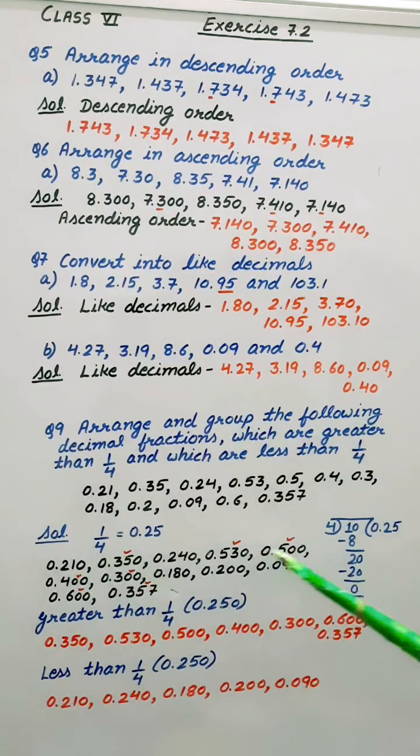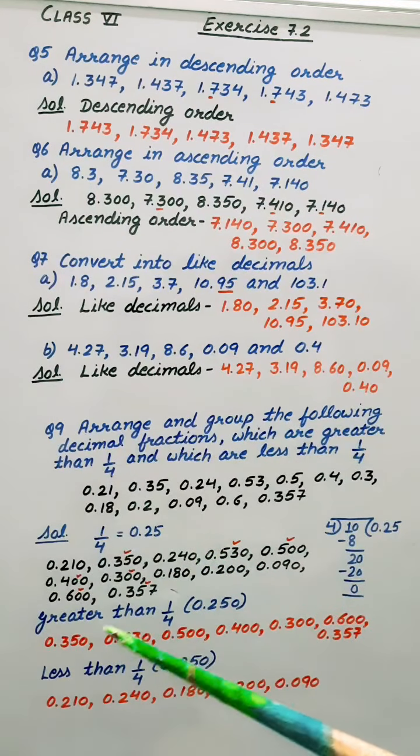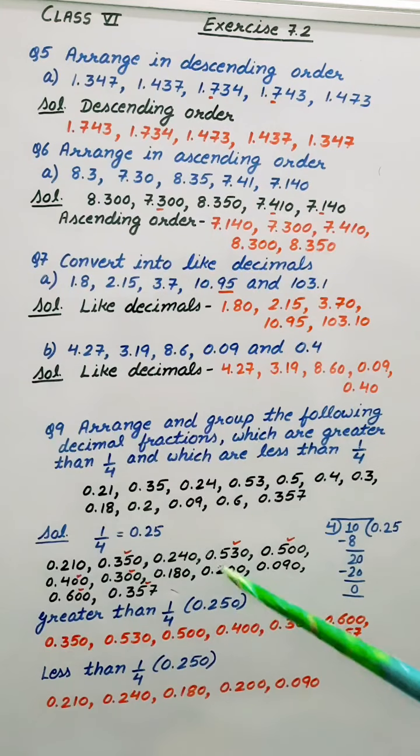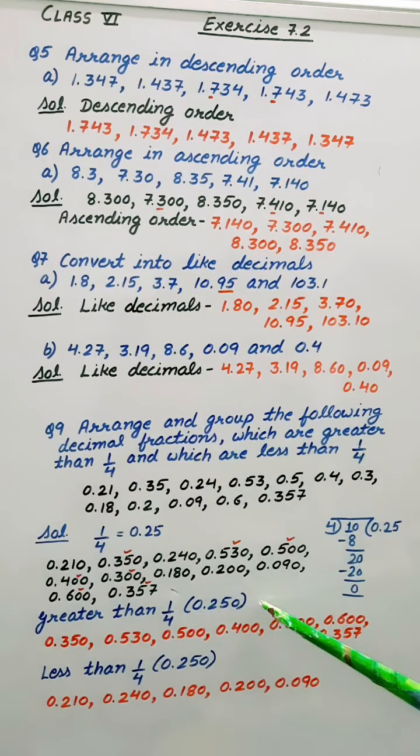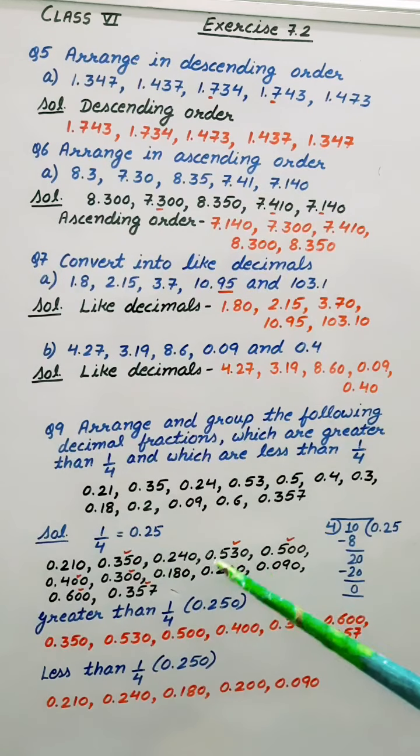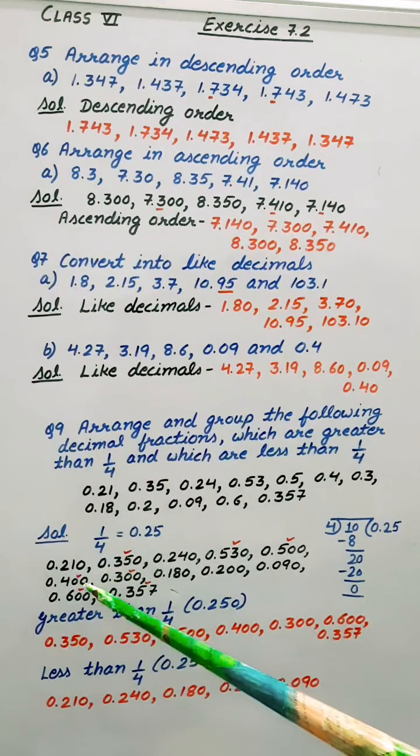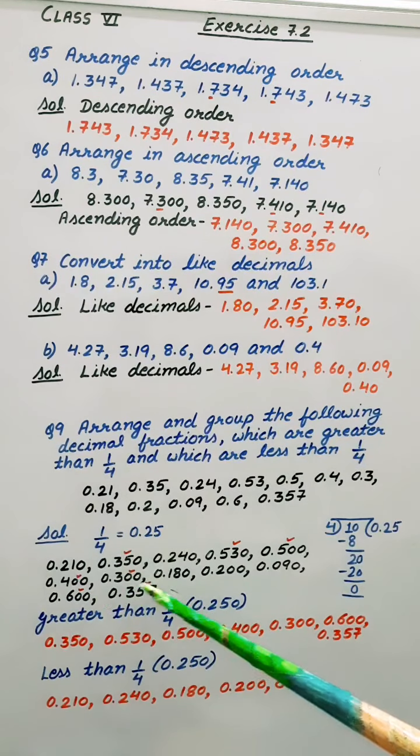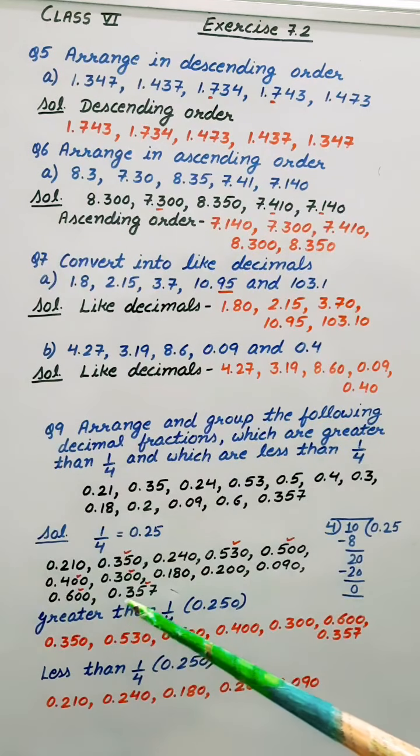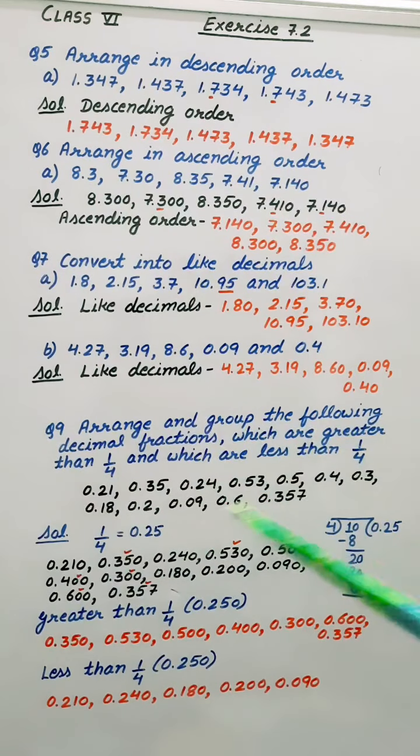So first of all, I have written them in like decimals. Now the numbers which are greater than 1 by 4, that means 0.250. They are 0.350, 0.530, 0.500, 0.400, 0.300, 0.600, 0.357. Or we can write them simply like this.